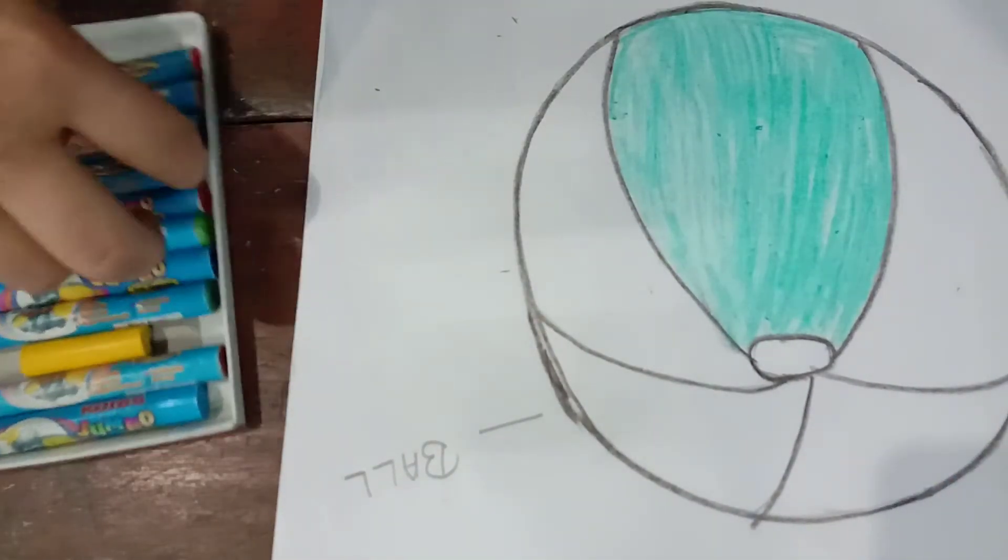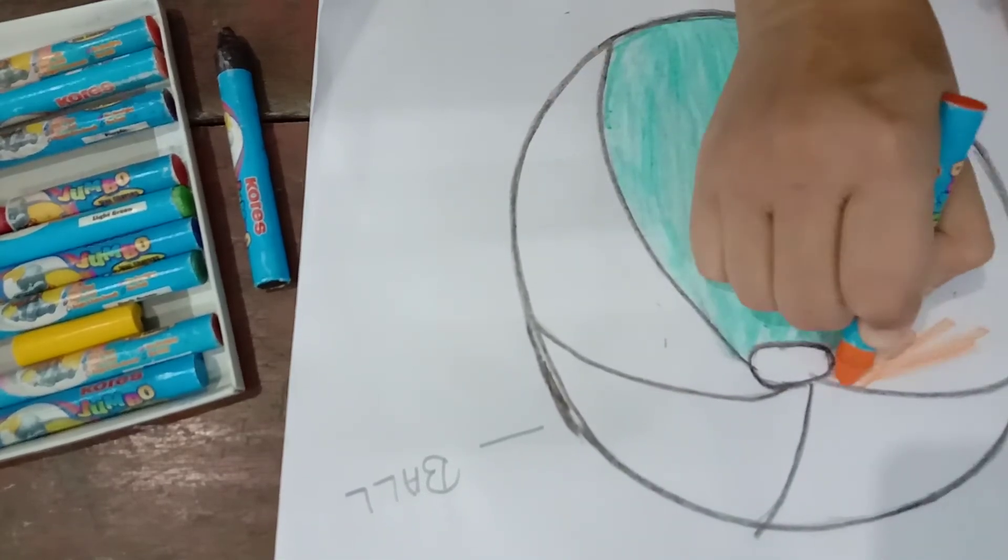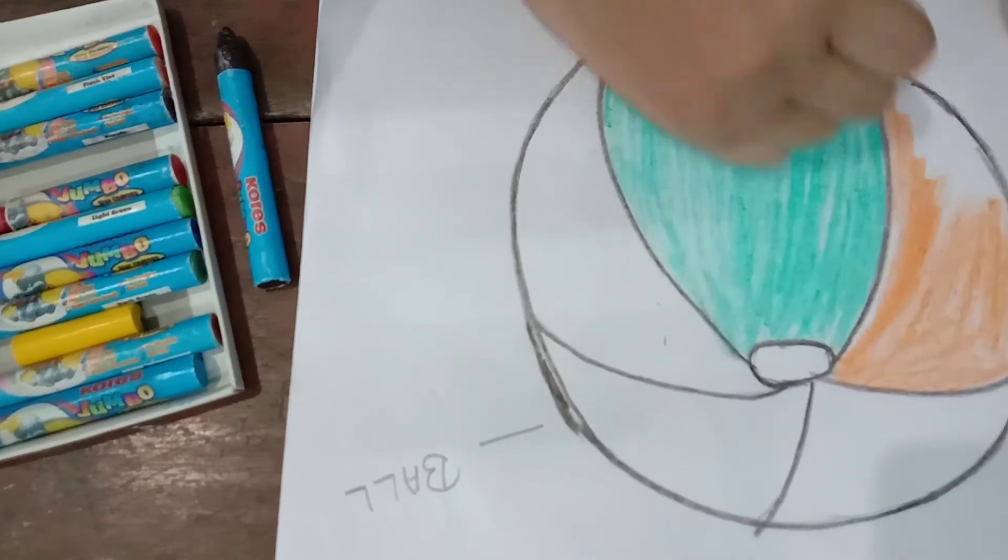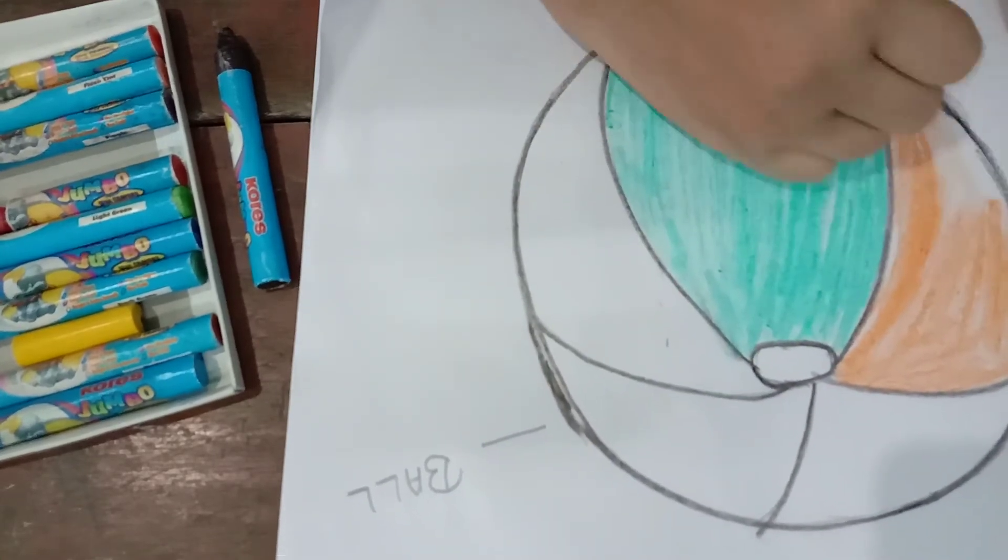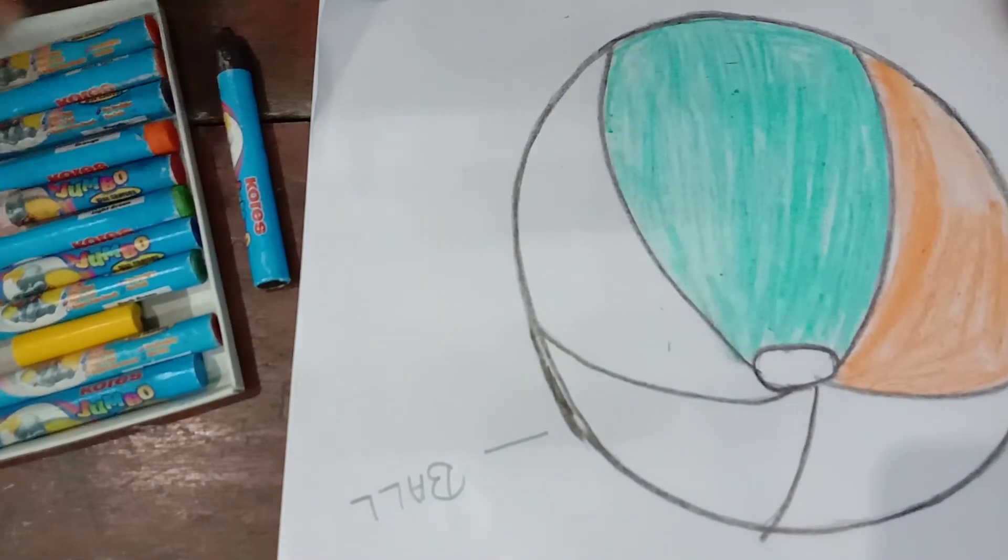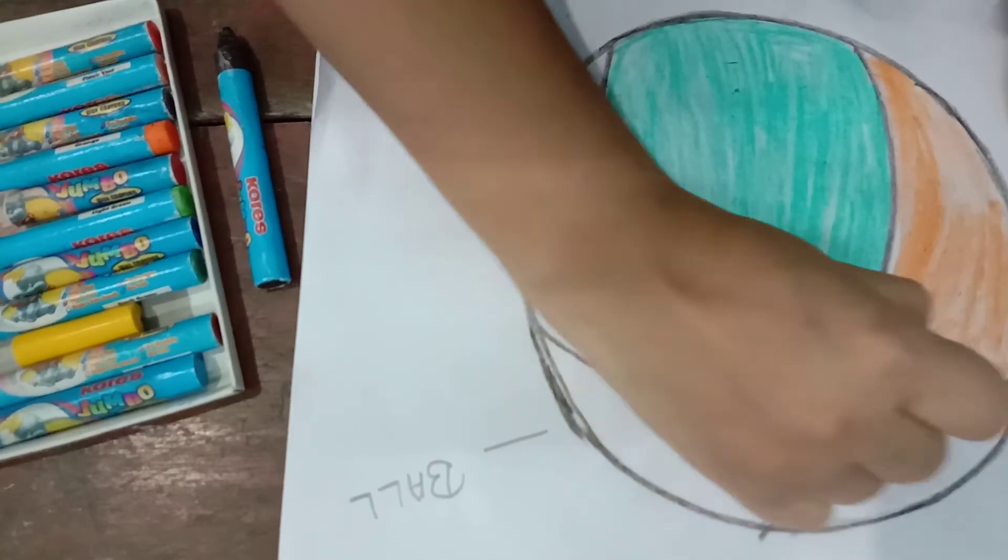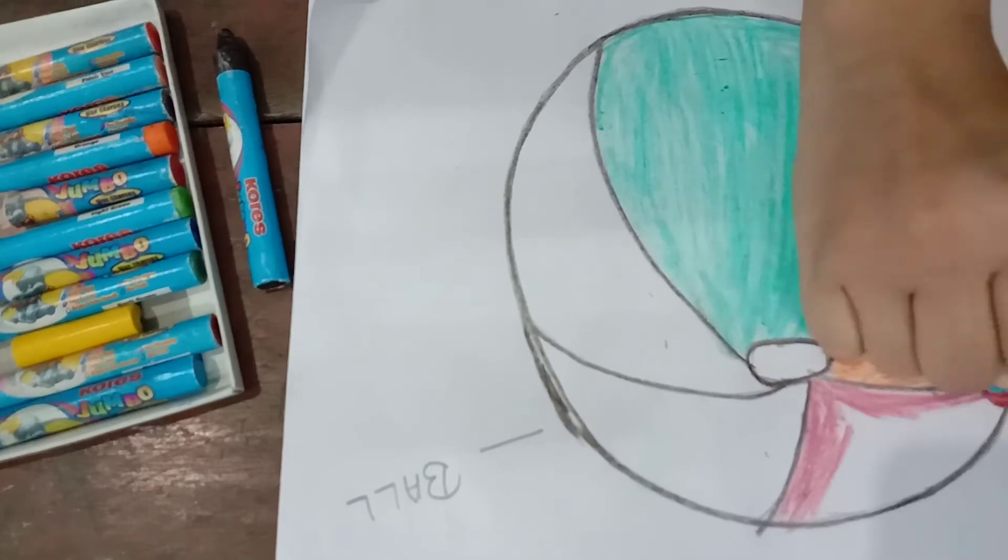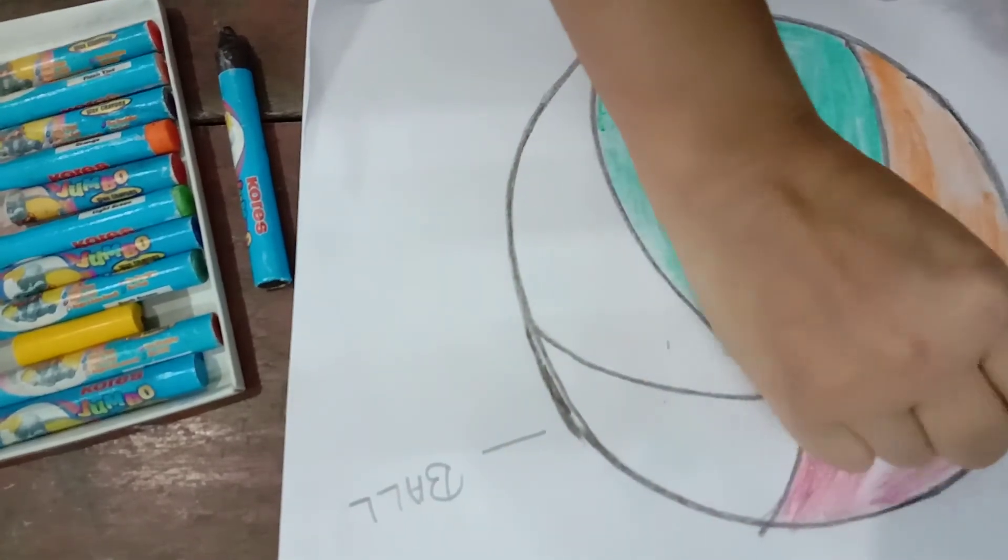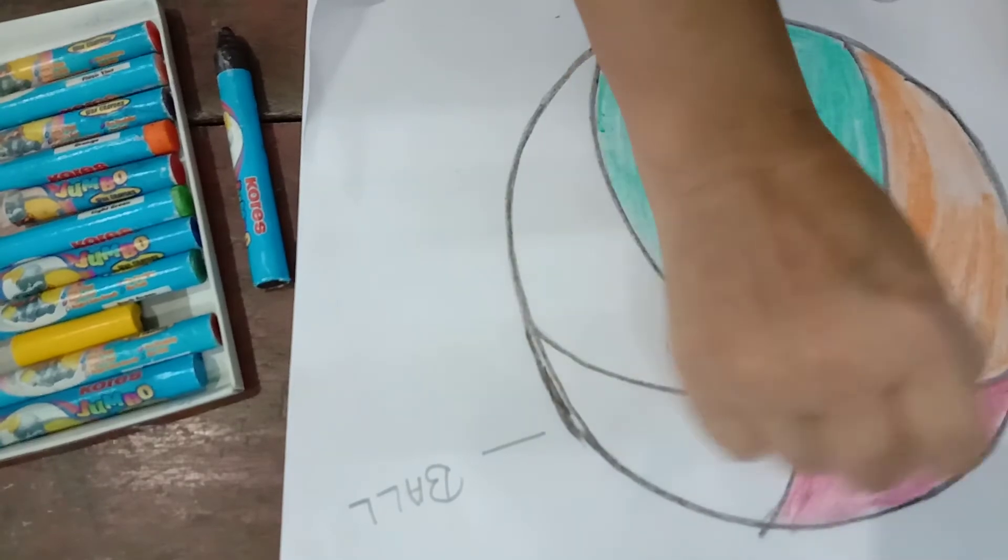Now, I am taking orange color in the same way up and down. Orange color also done. Now, I am taking red color. Red color also done.